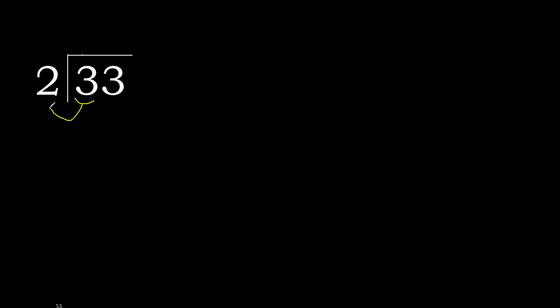33 divided by 2. Here 3 is not less, therefore with 3. 2 multiplied by which number is nearest to 3 but not greater? 2 multiplied by 2 is 4, 4 is greater. Multiplied by 1 is 2, which is not greater. 3 minus 2 is 1.